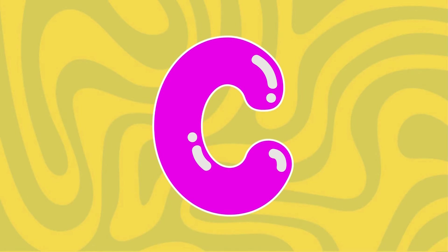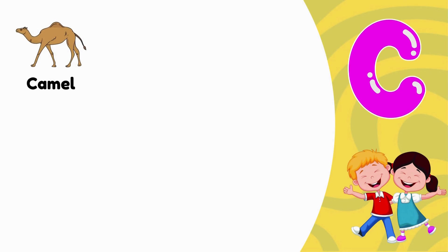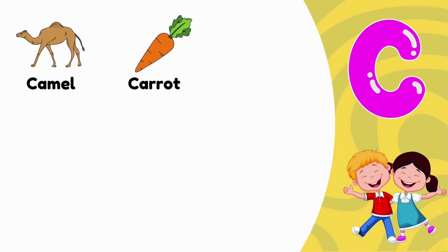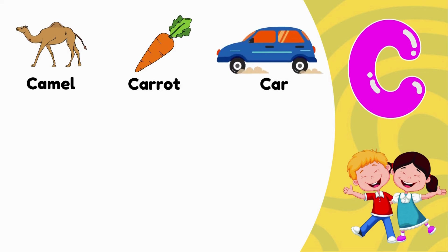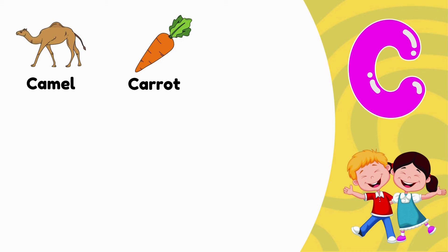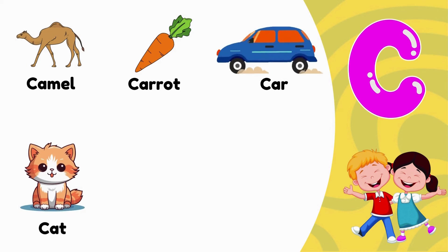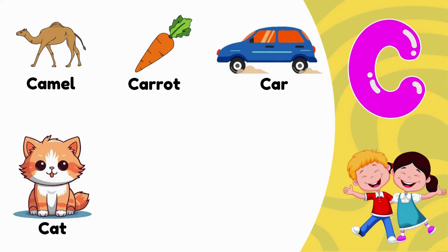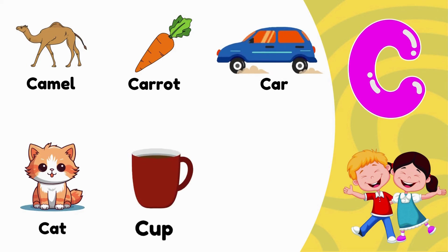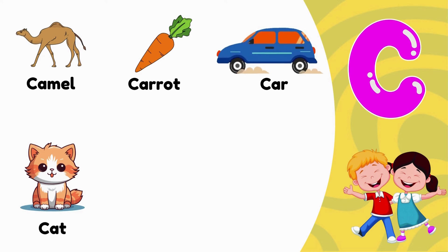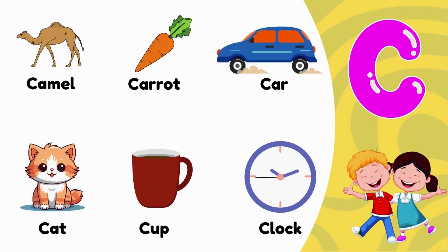C. C is for Camel. C is for Carrot. C is for Car. C is for Cat. C is for Cup. C is for Clock.